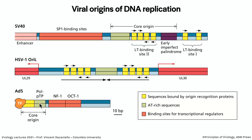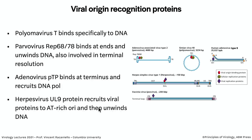Origins often also have binding sites for transcriptional regulators because promoters are frequently located nearby. The herpes oriL is flanked by two different promoters. For SV40, SP1 binding sites and an enhancer are adjacent to the origin. For adenovirus, binding sites for transcriptional regulators NF1 and OCT1 are present. These are concentrated areas of regulation — both for DNA replication and transcription.